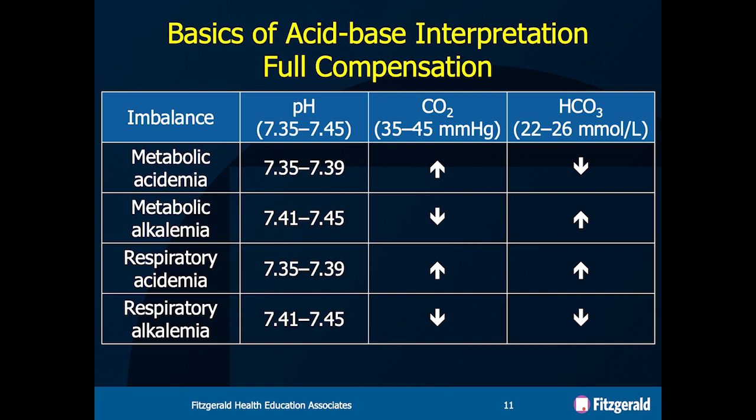When we think about this, we look at the range of the pH. If the pH is on the lower side, 7.35 to 7.40, the first problem was acidemia. If it's on the higher side, 7.41 to 7.45, the first process was an alkalemia. So you have to figure out whether the CO2 or the bicarb is the problem, and whether it matches up with the acidotic or the metabolic state. Then you can figure out where your first problem actually is.